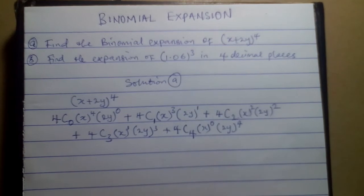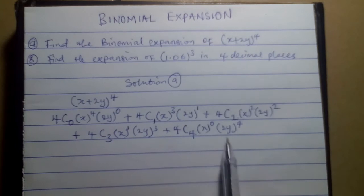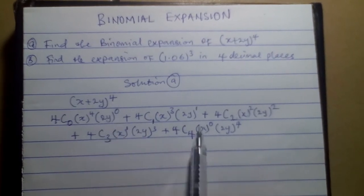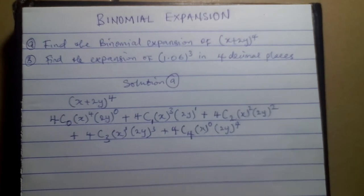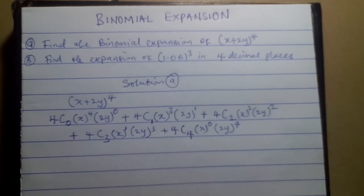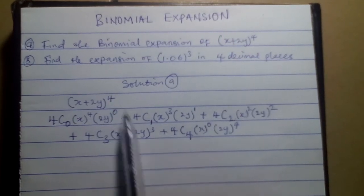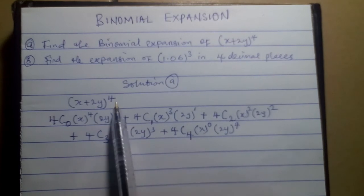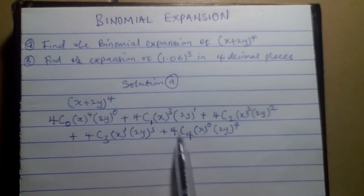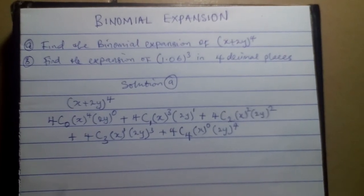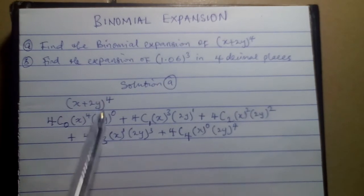Remember: since the power is 4, make sure you stop at 4 combination 4. There is nothing like 4 combination 5, 6, or 7. If you press 4 combination 5 or higher on your calculator, it will give you a math error. So you always stop at the power in combination with itself — 4 combination 4 for power 4, 5 combination 5 for power 5, and so on.